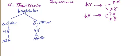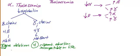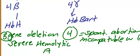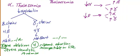Four beta chains means the hemoglobin is Hemoglobin H, and four gamma chains means Hemoglobin Bart's. Hemoglobin H corresponds to three gene deletion with severe hemolysis. Hemoglobin Bart's corresponds to four gene deletion, which causes spontaneous abortion and is incompatible with life.